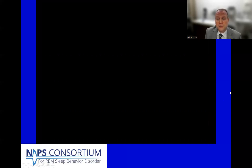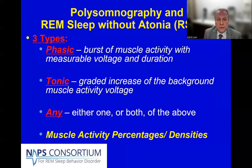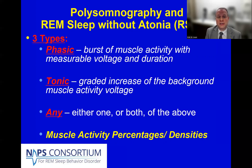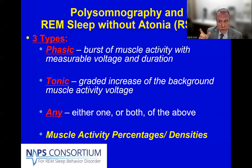In terms of the polysomnogram muscle activity qualities, known as REM sleep without atonia or RISWA for short, there are three main types. There is phasic muscle activity, which are bursts of muscle activity with a measurable voltage — the height of the activity — as well as the duration, which is the width of the activity.